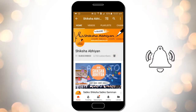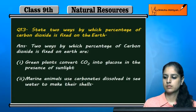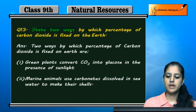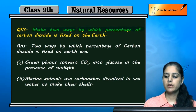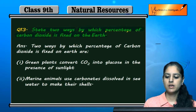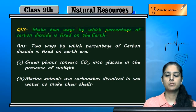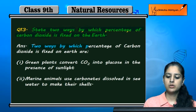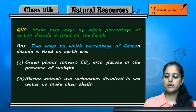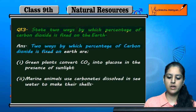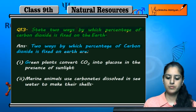Question no. 13: State two ways by which percentage of carbon dioxide is fixed on earth. Do tariqe bataane hain jis se carbon dioxide is fixed on earth. So two ways by which percentage of carbon dioxide is fixed on earth are: